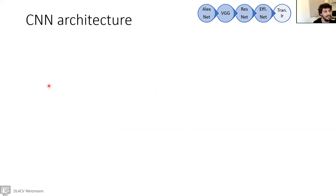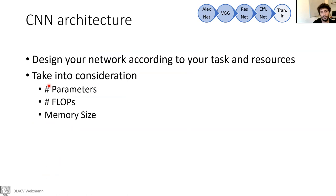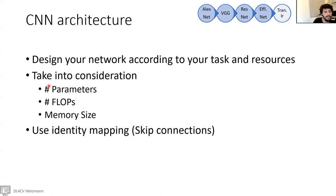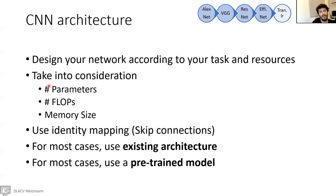Architecture conclusions: design your network according to your task and resources. When designing your architecture, take into consideration the parameters, the number of floating point operations, and the memory size. Use identity mapping skip connections to avoid vanishing gradient. Most importantly, don't try to redesign your architecture from scratch — use existing architectures and existing building blocks. And even more than that, most of the time you don't even have to train your models from scratch — you can use a pre-trained model through transfer learning.